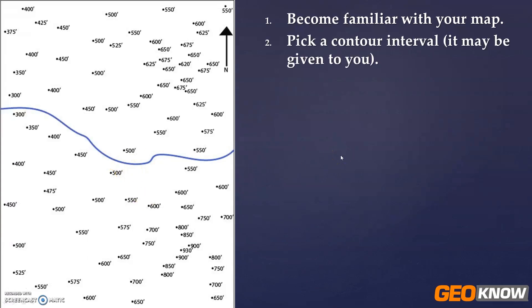Another thing you need to figure out is your contour interval. Sometimes it's given to you. Sometimes your teacher just says use a 50 foot contour interval. But in our case it's not given to us, and in real life it's not given to you. So you need to figure it out.